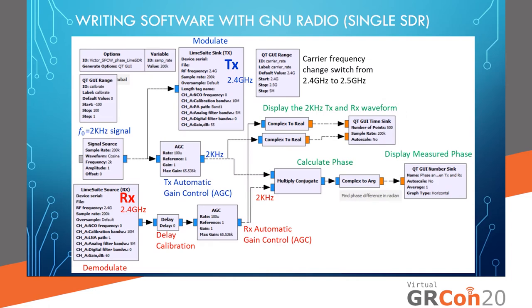This is the actual code for my single SDR design in GNU Radio. It starts with the 2 kilohertz signal source, which is then modulated. This mostly reflects the mathematics shown earlier — it's modulated, transmitted, received, and then the phase is calculated by multiplying the conjugates. The calculations can be displayed through GNU Radio as well. At the top, we have the switch which allows switching between the 2.4 and 2.5 gigahertz carrier frequencies.